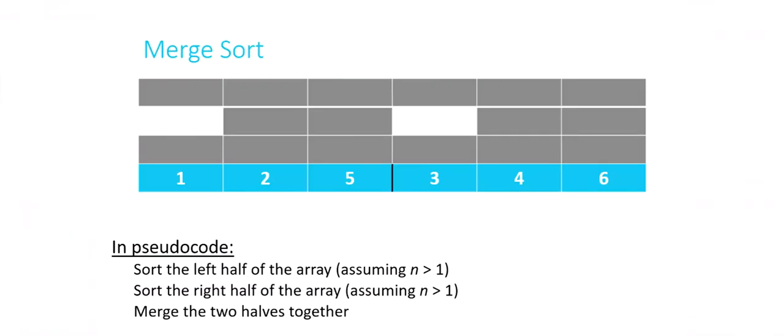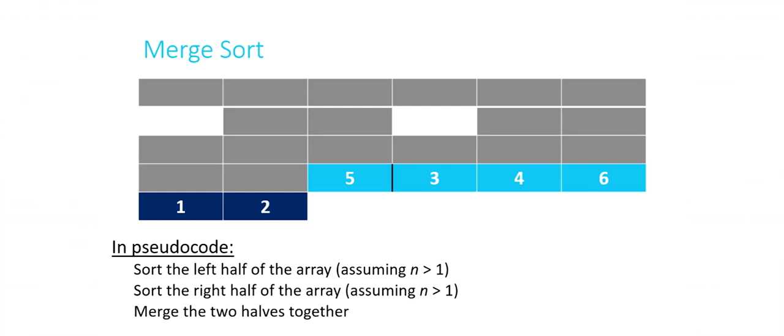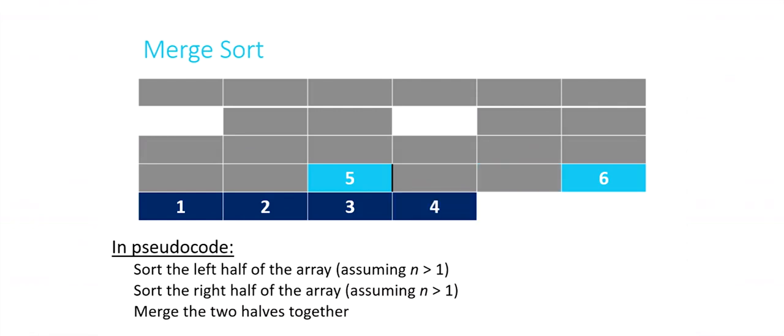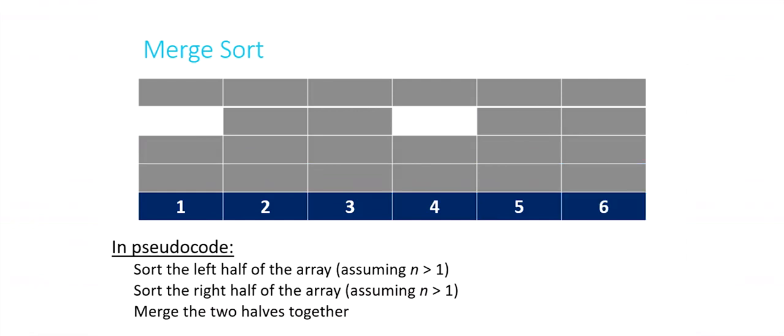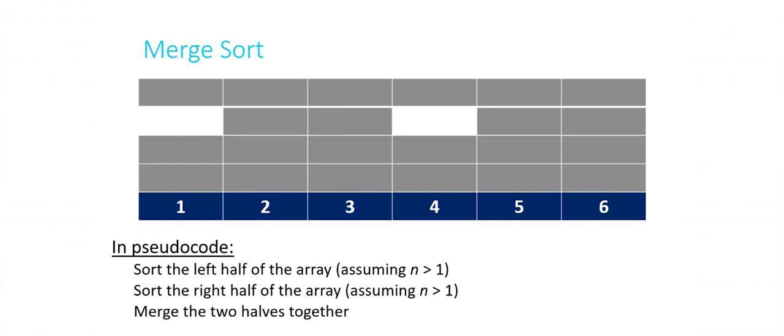Now the final step: merge those two sorted halves together. We keep asking: which is lower? One or three? One. Two or three? Two. Five or three? Three. Five or four? Four. Five or six? Five. Six or nothing? Six. By going through this process recursively — breaking the problem into smaller sub-arrays, sorting them, and merging them — we've completed the sort: one, two, three, four, five, six, all in order in dark blue.